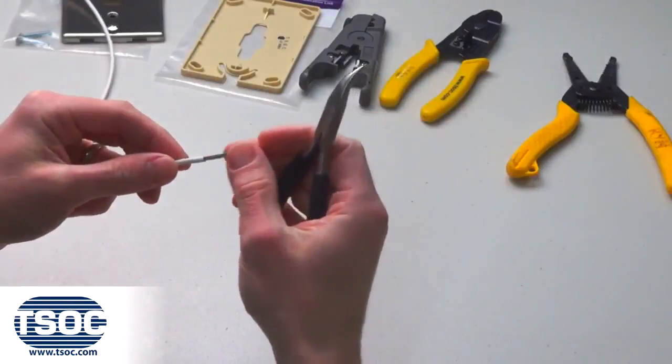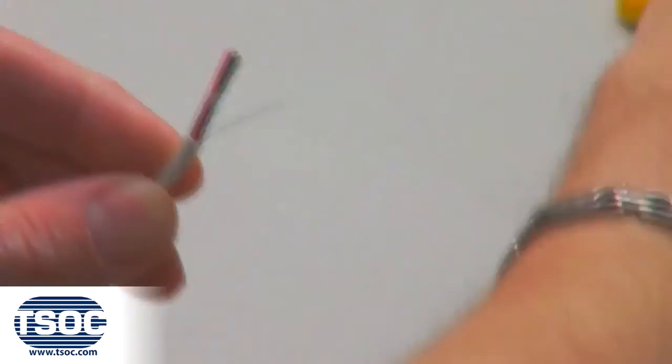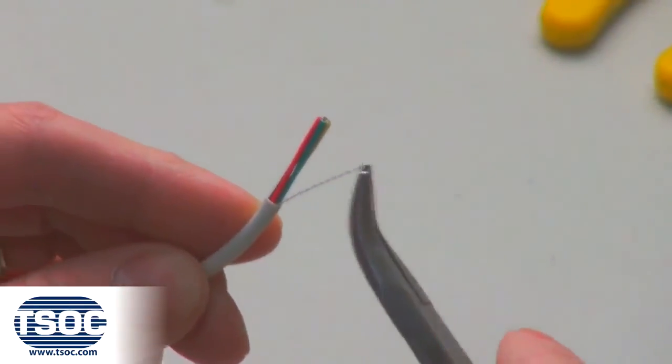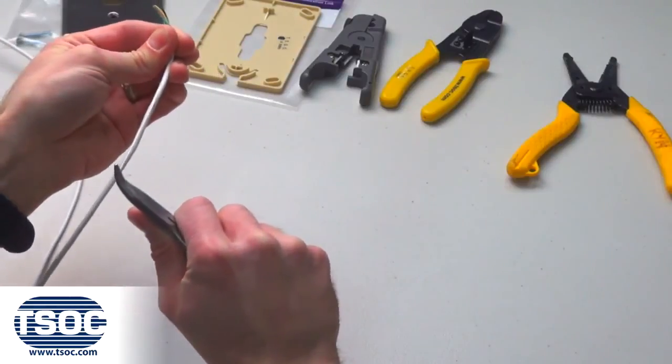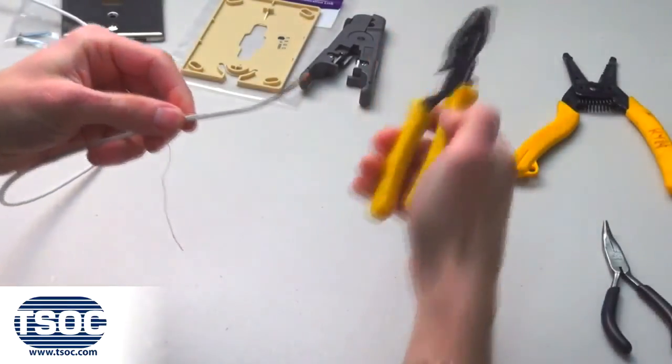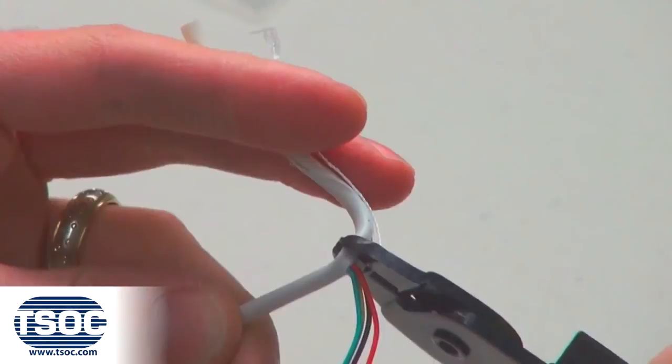Step 2: Remove the cable jacket exposing the four insulated conductors and a nylon thread pull string. Use the needle nose pliers and pull string to expose the required length of wire. Remove the cable jacket and pull string using the cable prep tool.